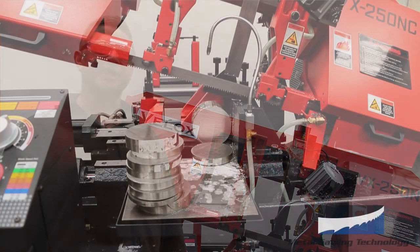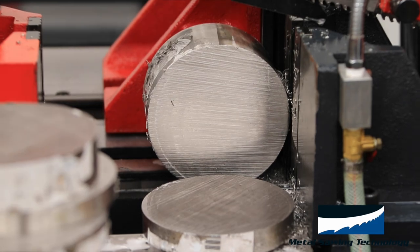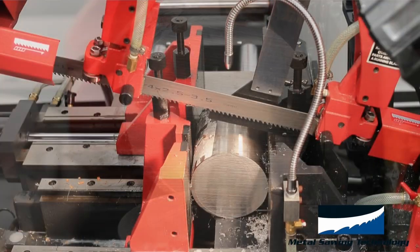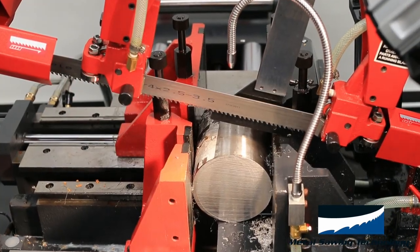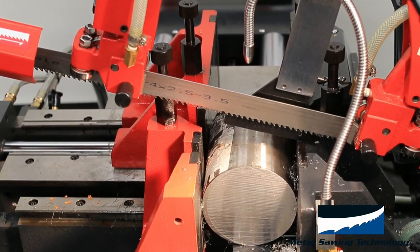We're going to make a cut today on the Velox 250 NC bandsaw machine. We have a piece of 304 stainless 5-inch diameter. Today we're going to run our carbide tip band. This band is an inch and a quarter 2.5 to 3.5 triple chip.